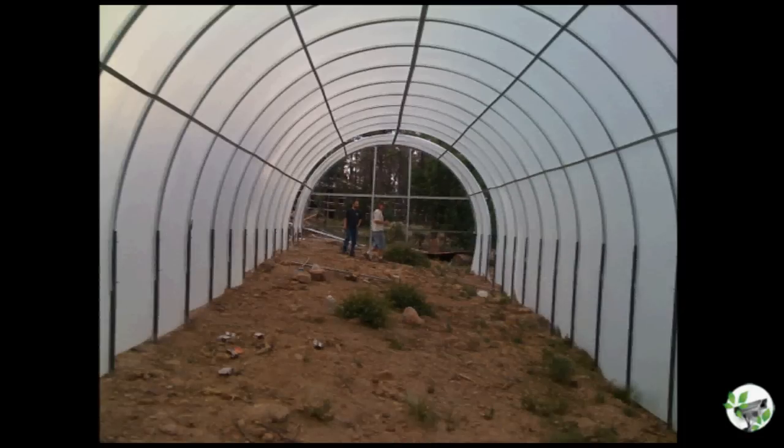So the poles are level, the frame is level on top of the poles, but we still have eight and a half feet lower here than we do at the other end of the greenhouse.